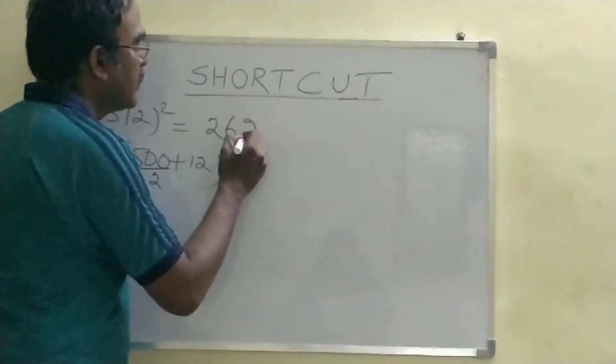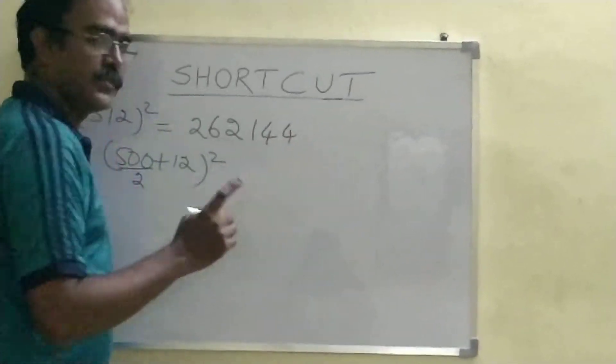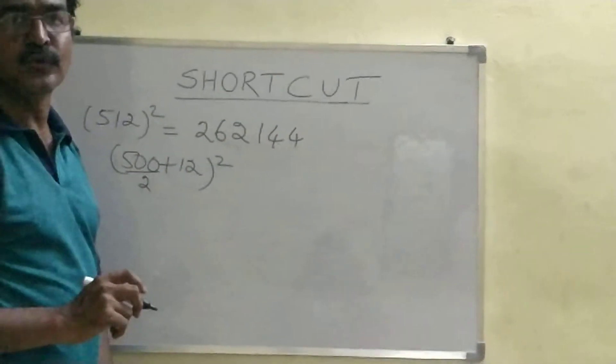Let me write the answer here. 262. What is 12 square? It is 144. So, straight away answer is 512 whole square is 262,144.